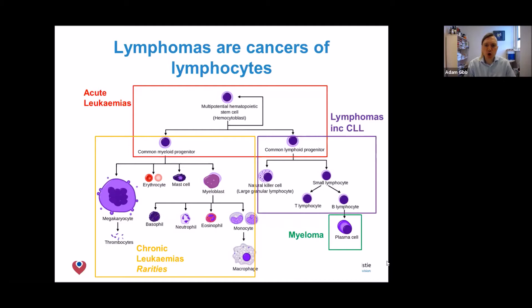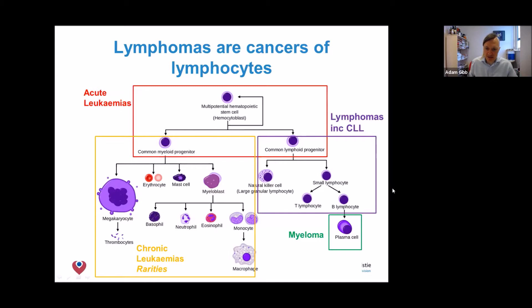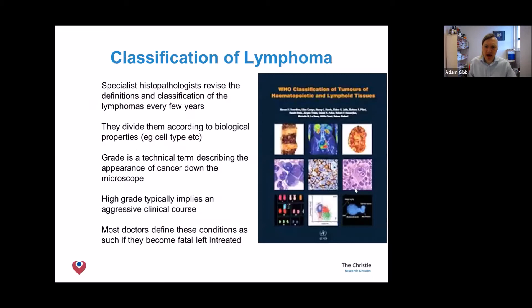Blood cells are born in the bone marrow with a progenitor cell at the top, then they divide and mature into all the various different types of healthy blood cell which circulate around the blood system. When cells go wrong and turn cancerous, we give these cancers the name lymphoma — they are cancers of white blood cells named lymphocytes.